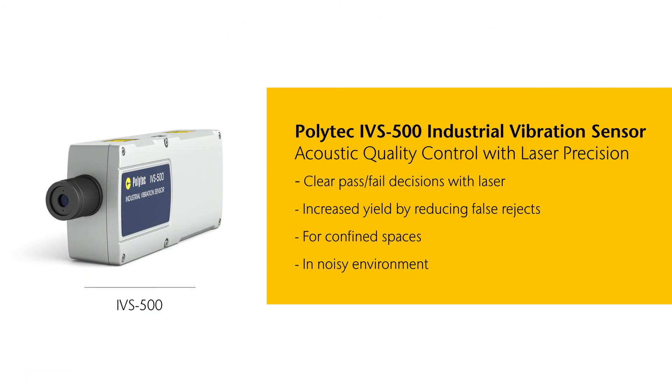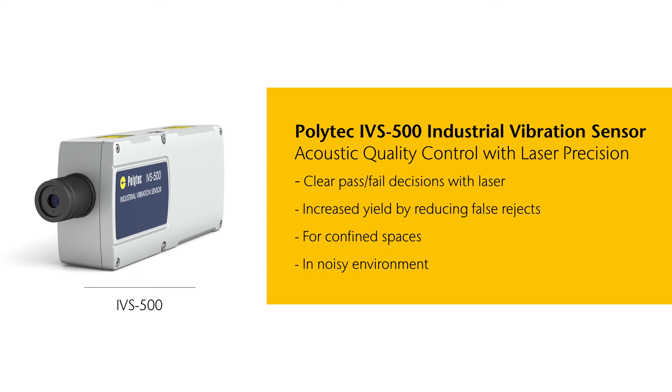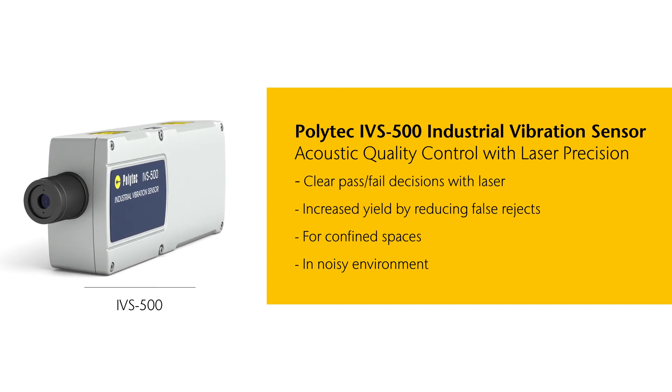The IVS-500 industrial vibration sensor. Acoustic quality control with laser precision. Make clear pass-fail decisions based on repeatable measurements. Increase your yield by reducing false rejects. Reliably measure even in confined spaces and harsh, noisy production environments.